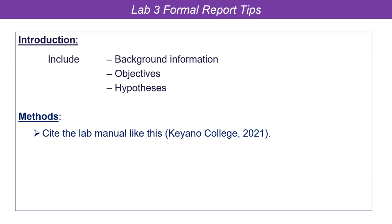For the methods section, I do not want you to copy out the entire lab manual — there are like five pages of methods. What I want you to do is make a very brief, condensed summary of the procedure. Because you're only giving a brief, concise summary, you're going to cite the actual lab manual. Your very first sentence should say something about how the complete detailed procedure is found in the Biology 107 lab manual, and then you're going to cite it. Citations look something like this: author and year found in brackets. We'll talk more about citations next week.